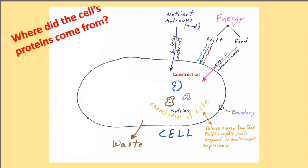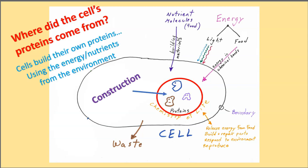Where did the cell's proteins come from? Cells build their own proteins using the energy and the nutrients from the environment. So cells are like a construction site. They're building the proteins. And then the proteins are working out there on the factory floor doing all the chemistry of life.